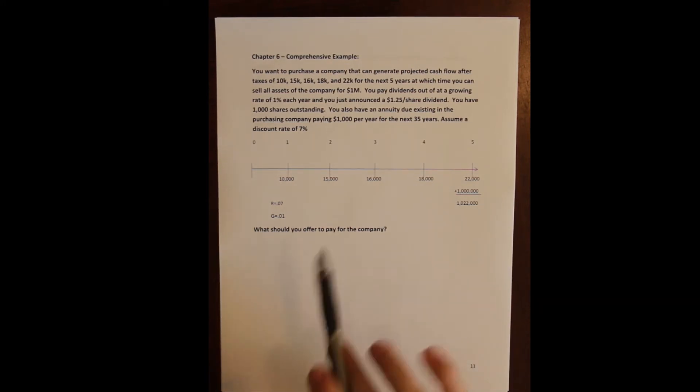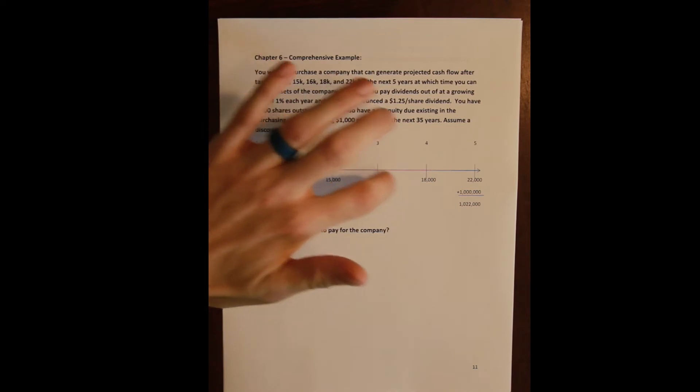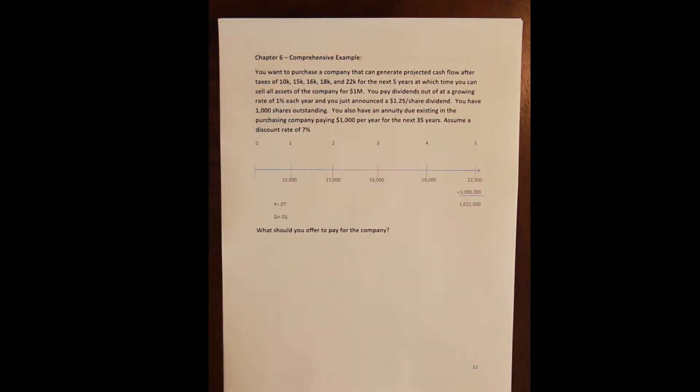Assume a discount rate of seven percent for everything. What is the value of the company that we want to buy? And what is the value of the total company if we buy it? Right? So the combined account. Now the value of anything, as we talked about, is the present value of its future cash flows. And so what we should offer to pay for the company is the present value of the five years of cash flows, plus the million dollars that we'll be able to sell the assets for. That's what the company is worth, and so that's what we should offer.